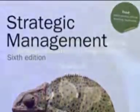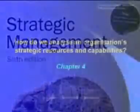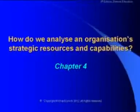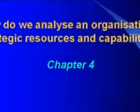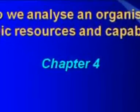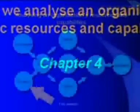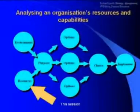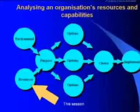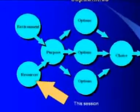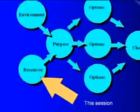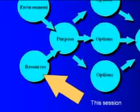Chapter 4 is about analysing the resources and capabilities of an individual organisation. It changes the focus from the outside environment to the inside, focusing on those resources that particularly deliver competitive advantage. There are additional features on the book's open access website, and these are outlined in Chapter 4 itself.